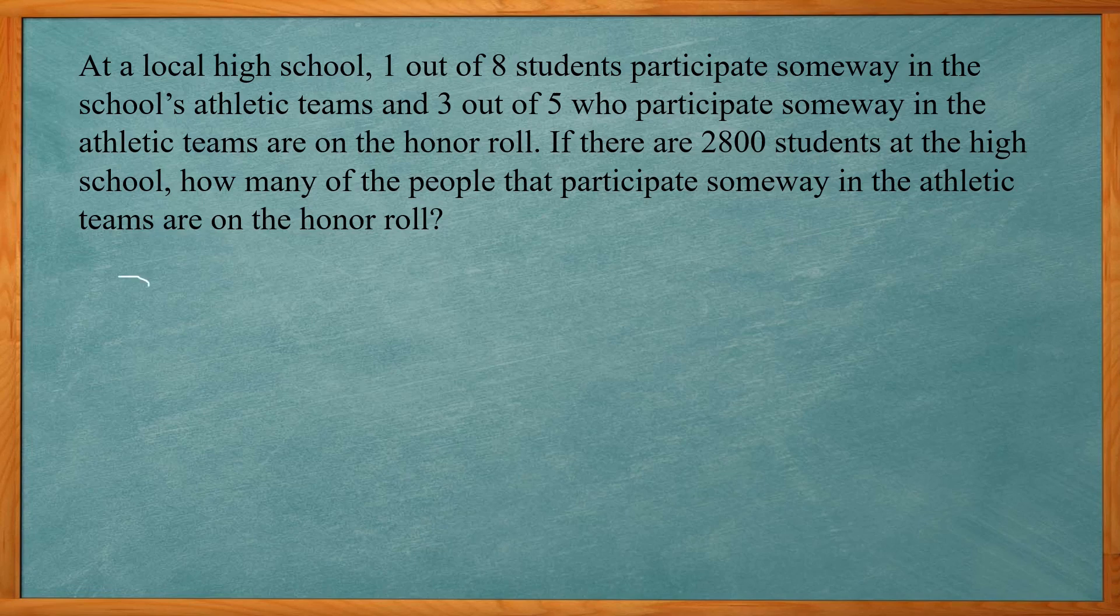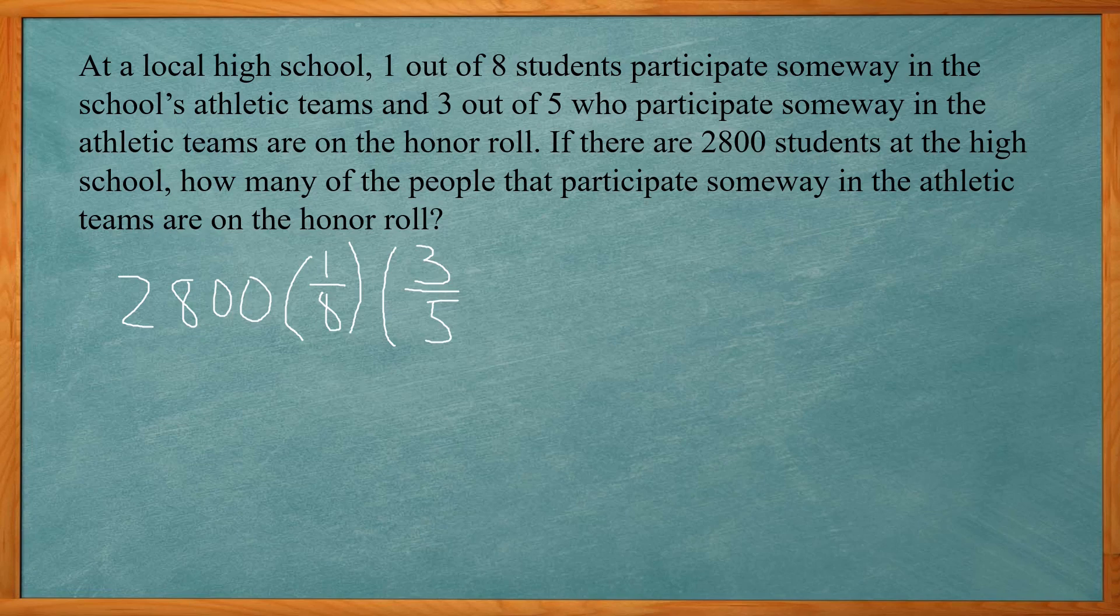All right so to solve this one we're going to take the 2800. We know that 1 out of 8 students are participating in sports, so we multiply that by 1 over 8. That'll give you how many students are participating in sports. Now the people who participate in sports, 3 out of 5 of them are on the honor roll, so we just multiply this by 3 over 5. So we multiply these all together, 2800 times 1/8 times 3/5.